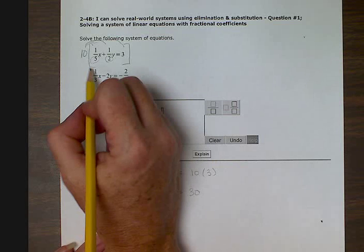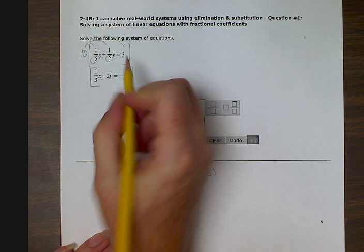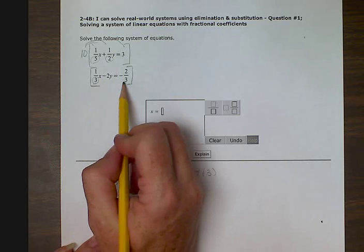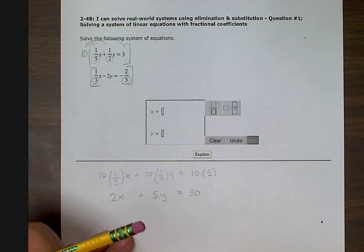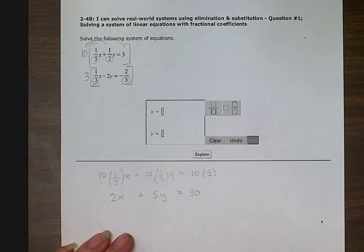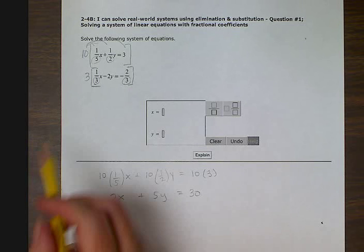Now I'm going to work on this second equation. I have a three over here for a denominator and a three over here. Since they're the same, I can just use one three to get rid of both of them. So I'm not going to multiply them together because they are the same. It will still work if you want to multiply them together and multiply by nine. It's just bigger numbers. I'm going to multiply by three.